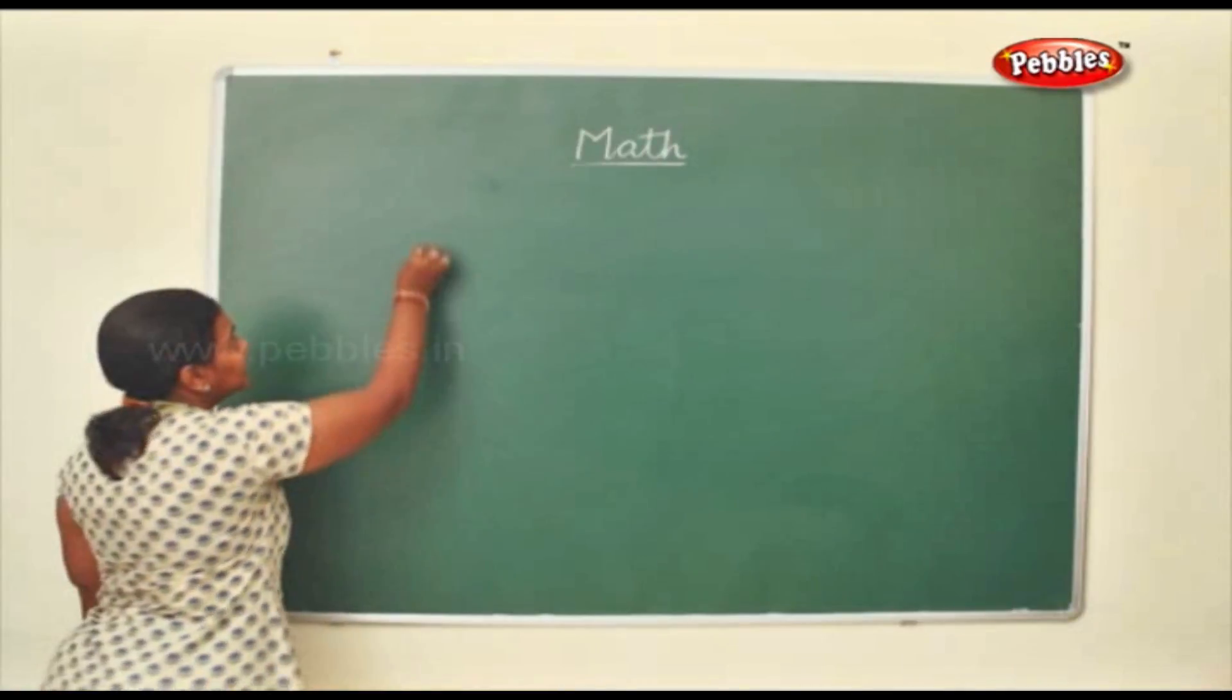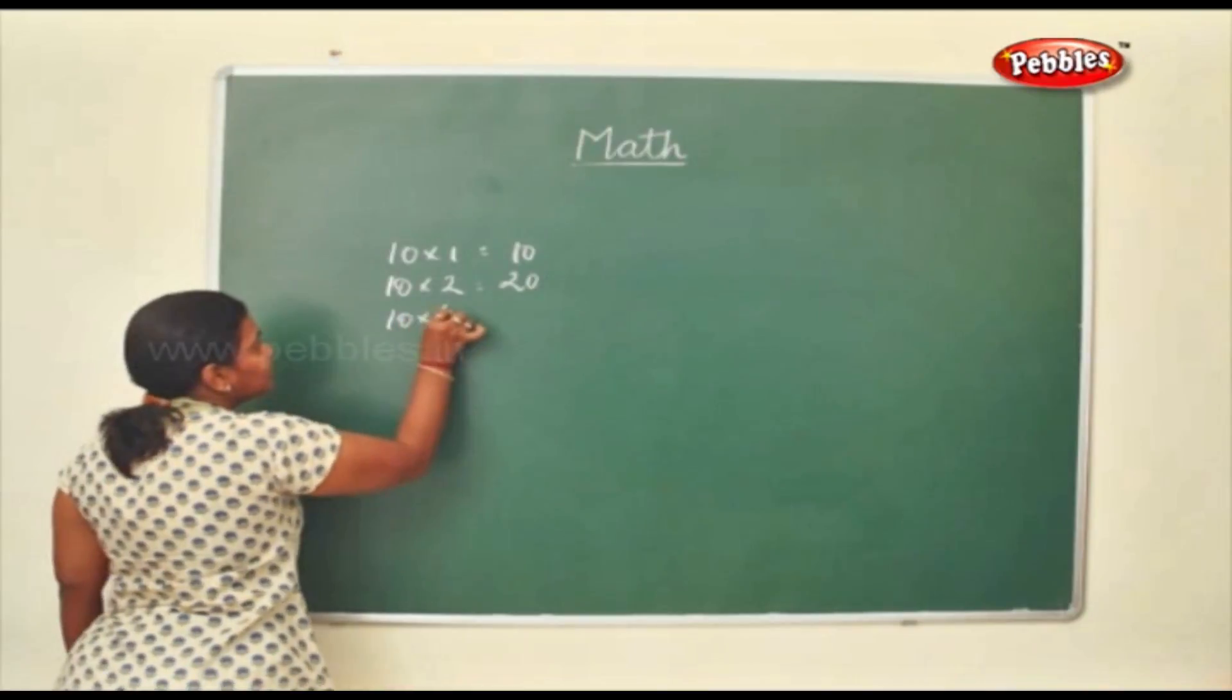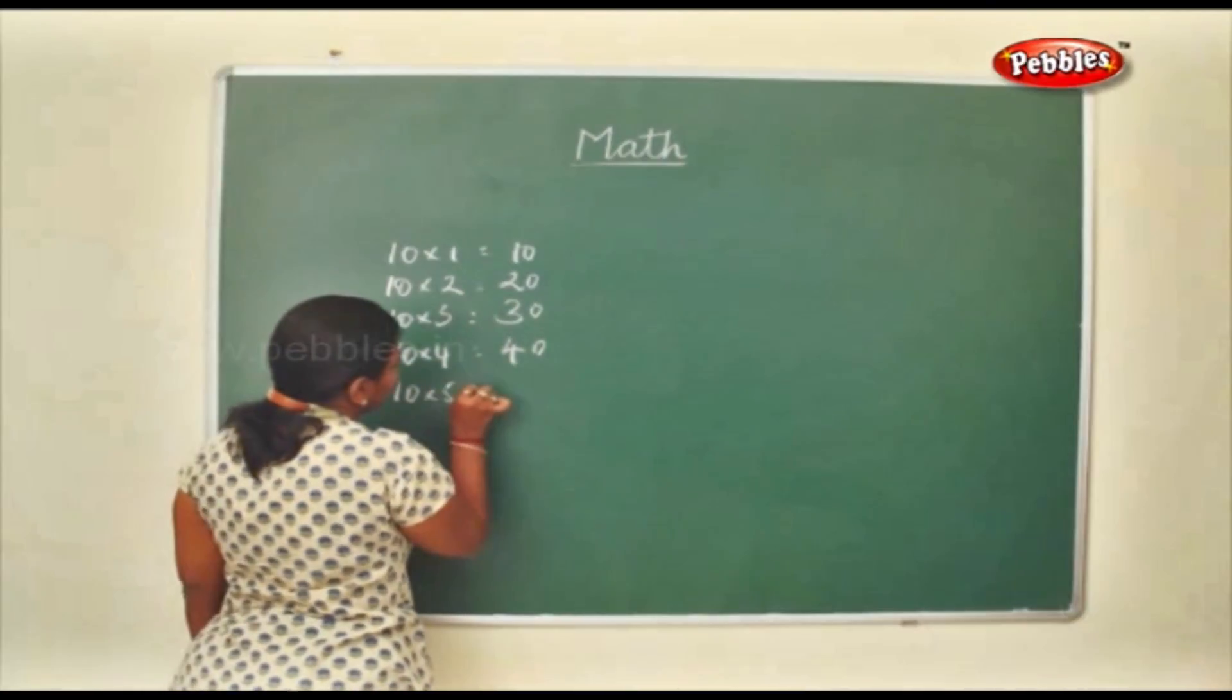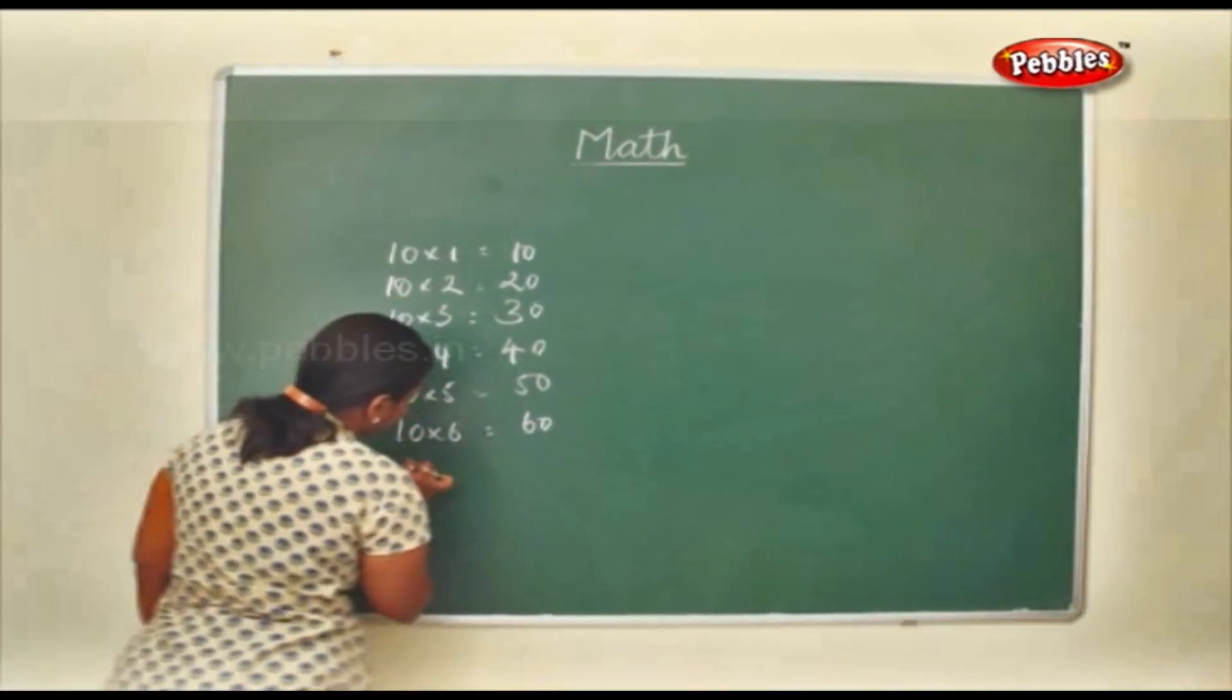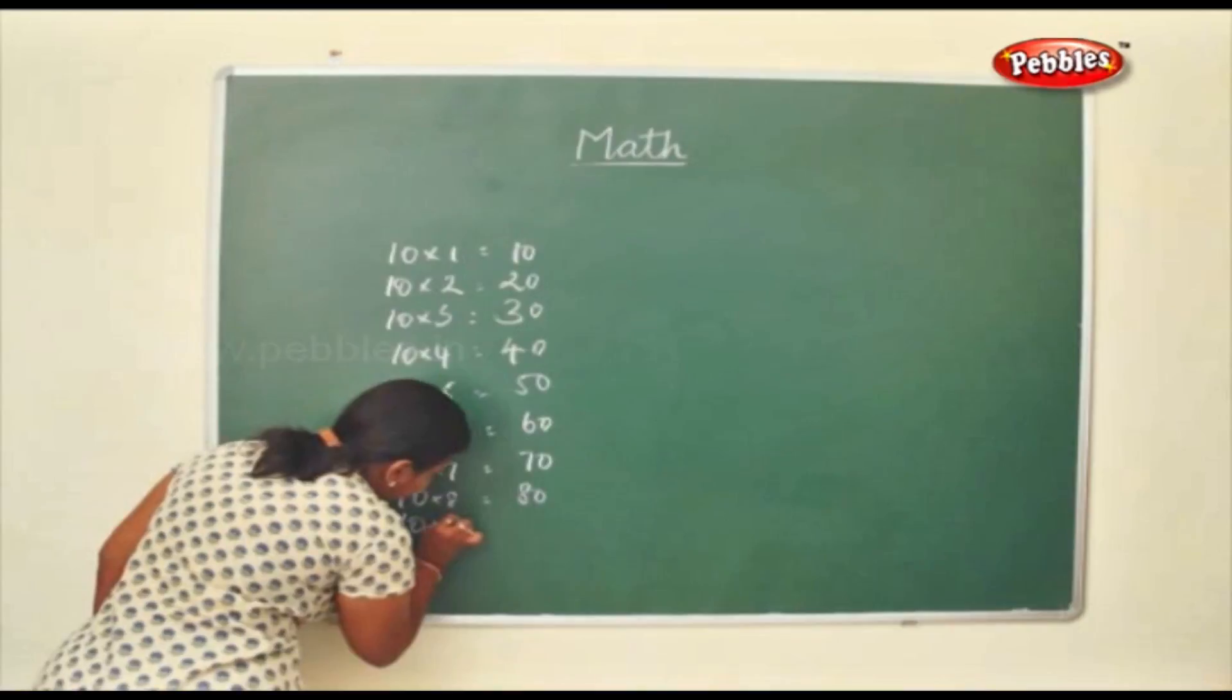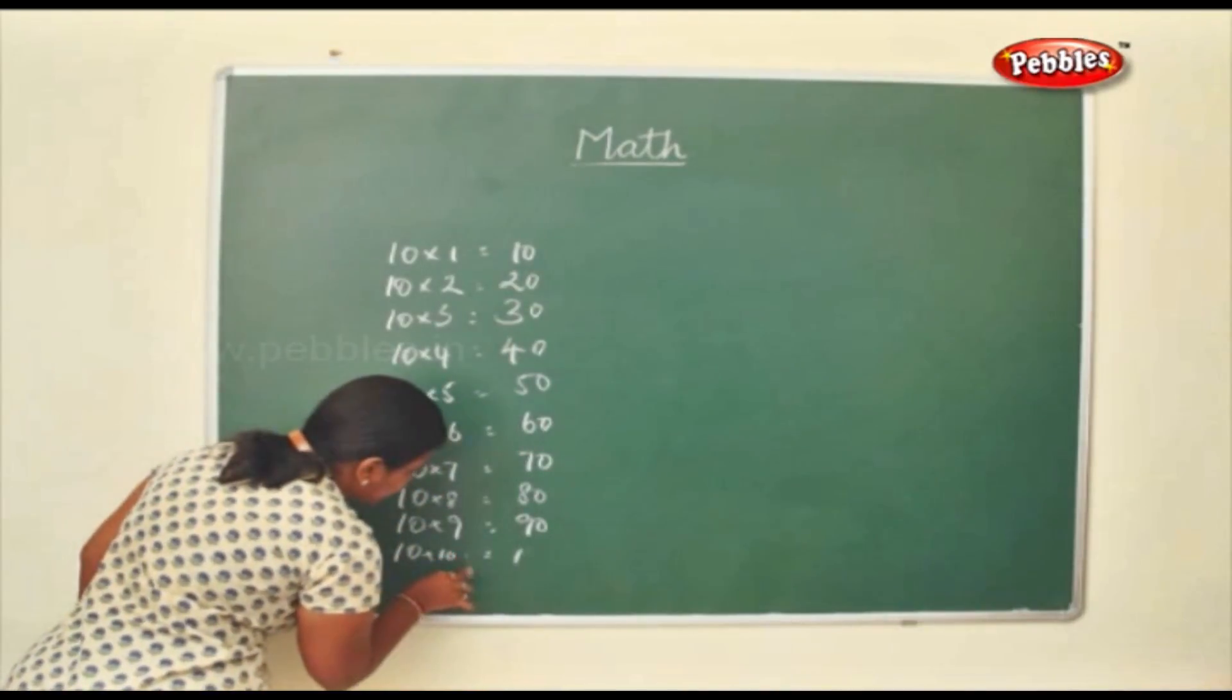Now we shall see the 10th table. So 10 1's are 10. 10 2's are 20. 10 3's are 30. 10 4's are 40. 10 5's are 50. 10 6's are 60. 10 7's are 70. 10 8's are 80. 10 9's are 90. 10 10's are 100.